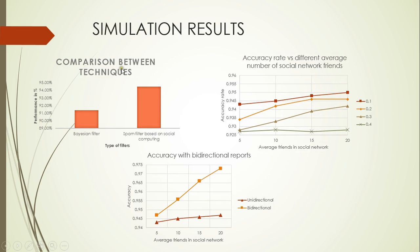Here are the simulation results. The first graph shows that a Bayesian filter performs around 91%, whereas a filter using social computing performs around 95%. The second graph shows the accuracy rate as the average number of friends increases — more friends leads to higher accuracy. The lower the threshold, the more accuracy is achieved; the highest accuracy is at the maximum number of friends with the least threshold. The third graph compares unidirectional and bidirectional reports: unidirectional is when I send my spam report to the social network, and bidirectional is when I send both spam and legitimate reports to the network.